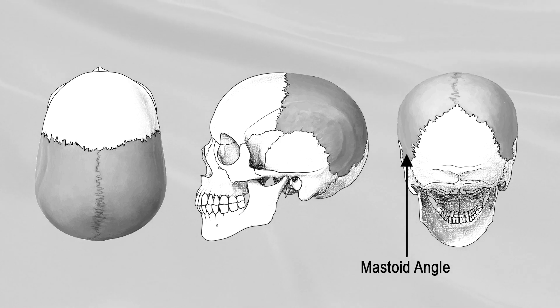The mastoid angle is received into the interval between the occipital bone and the mastoid portion of the temporal bone.